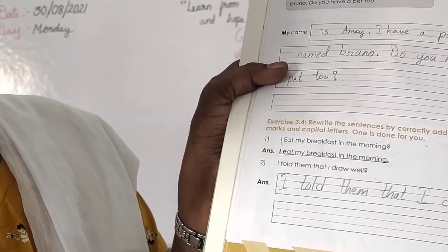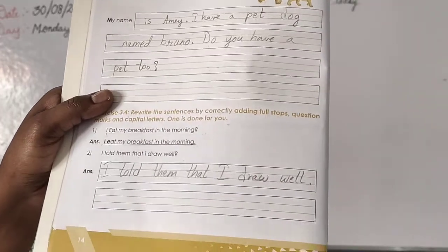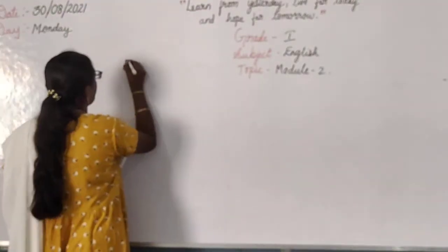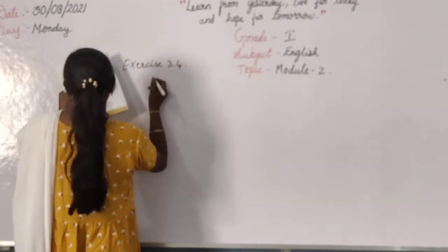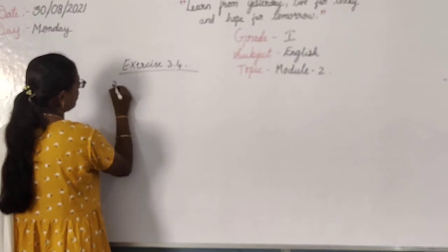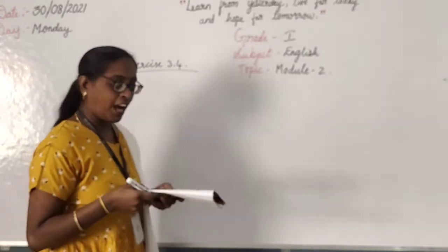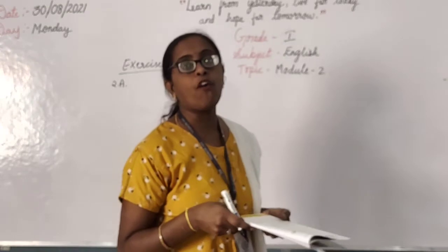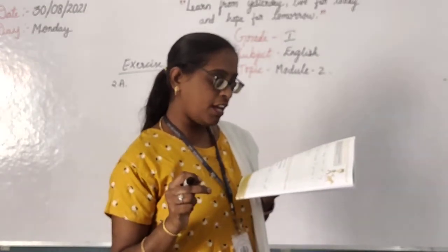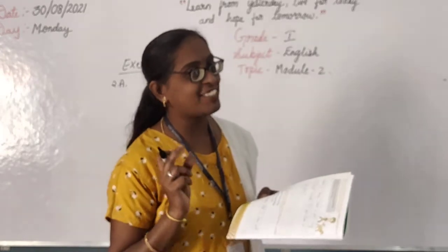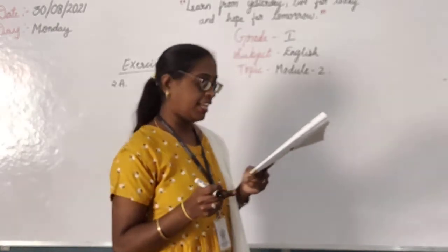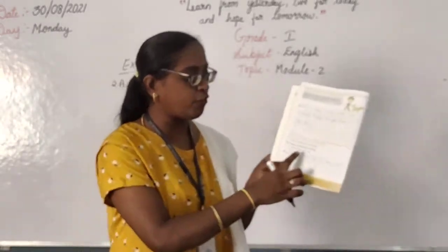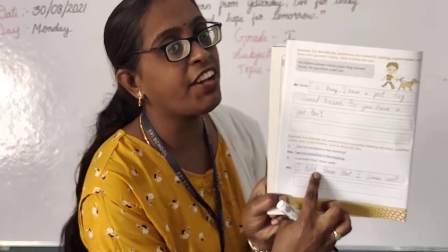Next: I told them that I draw well. I told them that I draw well. So I will write on the board, please copy down. Second answer, Exercise 3.4. How you will write? I told them that I draw well. They have given question mark also. In between, 'I' is not in capital. Now you have observed that. So write neatly. Here you have four lines. Touch the correct lines and write neatly.